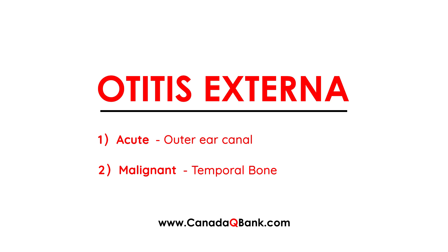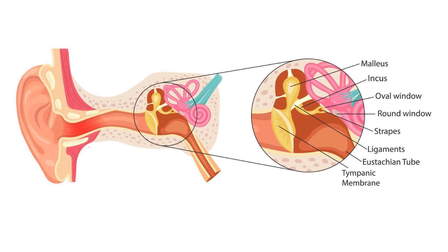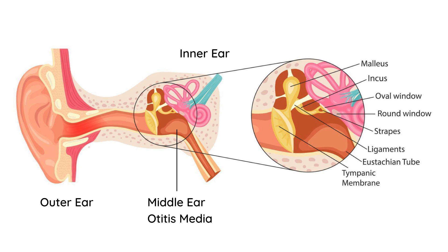Starting with acute otitis externa, here is a photo of the ear in cross section. The middle ear region shown here, when infected, is called otitis media. This video focuses on otitis externa, which is an infection of the outer ear — the area colored red to indicate infection — and is sometimes referred to as swimmer's ear.